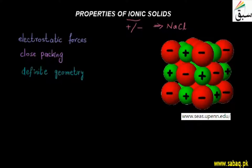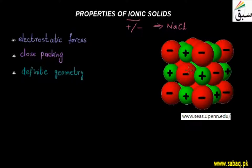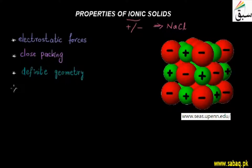So here we have three points. One property is electrostatic forces of attraction because of complete charged ions or charged species. Secondly, the charged species attract one another strongly, giving close packing. The third thing is that definite geometry results from close packing. The fourth thing is that each ion is surrounded by oppositely charged ions. Because of close packing, we have a unique property.